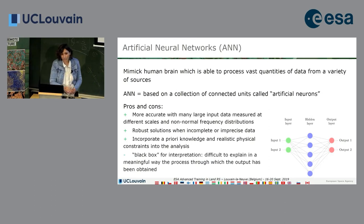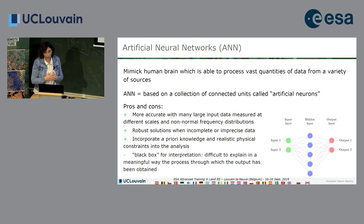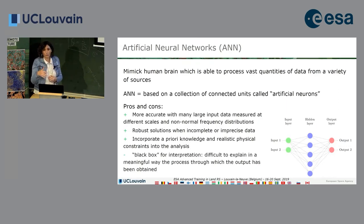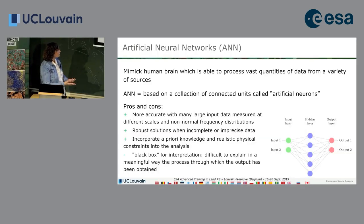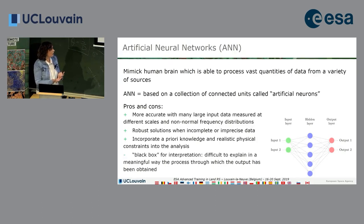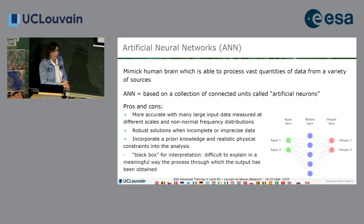The advantage is that this is much more accurate when you have very large datasets than the maximum likelihood. It also supports non-normal distributions that do not follow a Gaussian distribution, so it is more robust. You can also incorporate a priori knowledge and some realistic constraints by providing input data that corresponds to your area of interest.